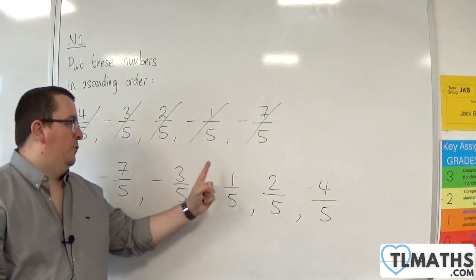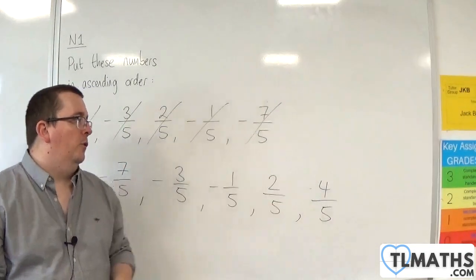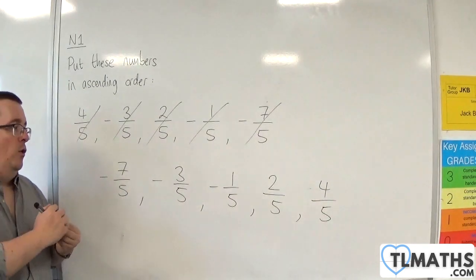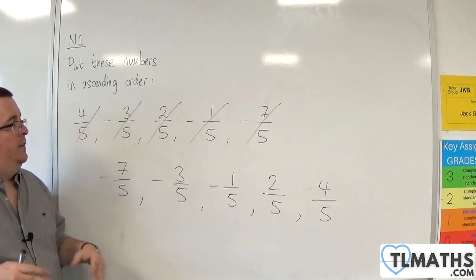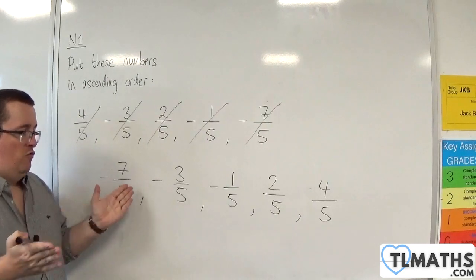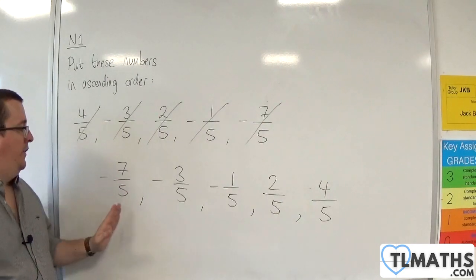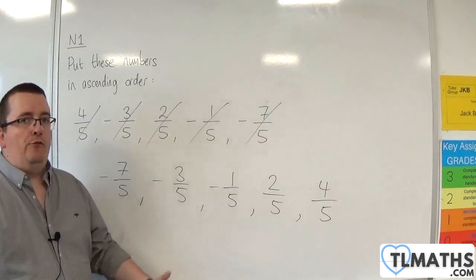So -7, -3, -1, 2, and 4. So essentially, if they all have the same denominator, you can just put the numerators in order of size. Obviously, you've got to write your answer as fractions.